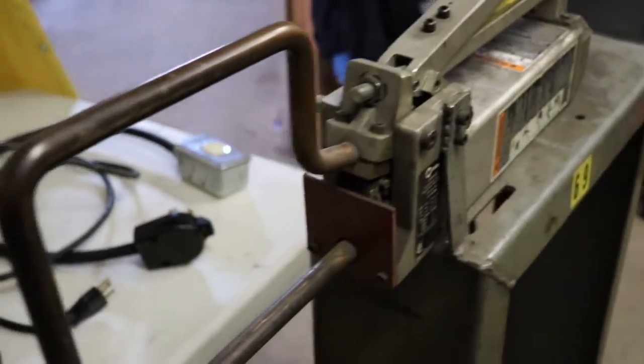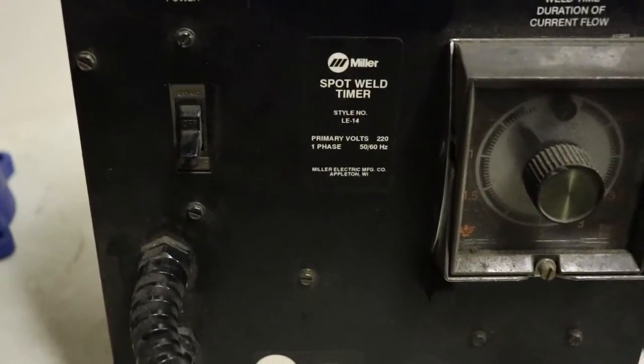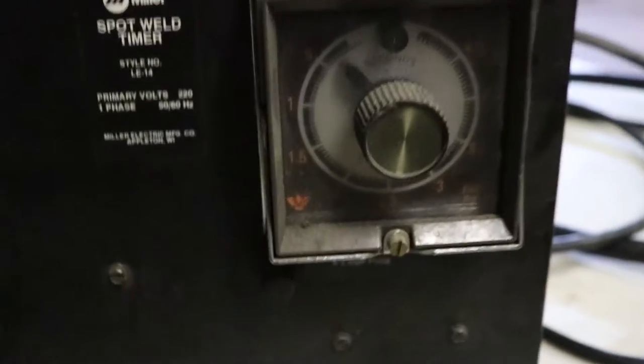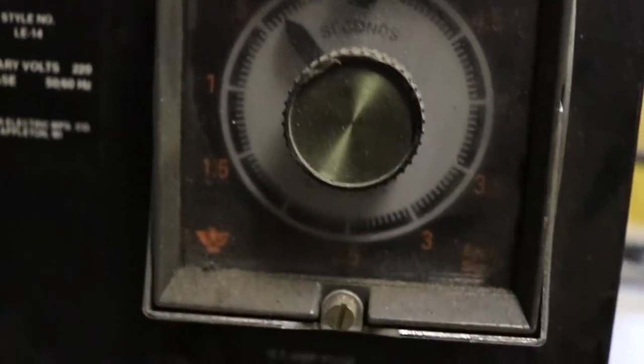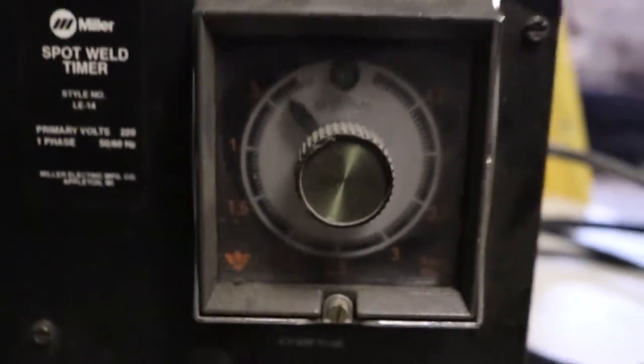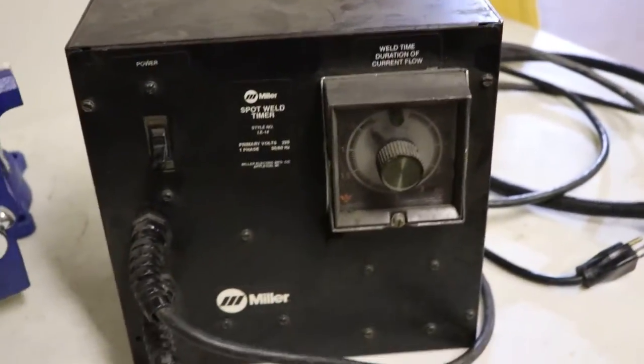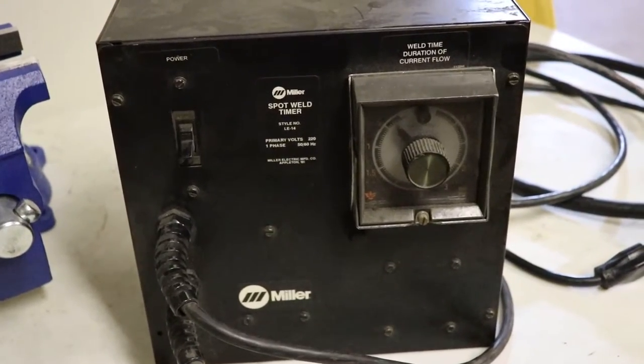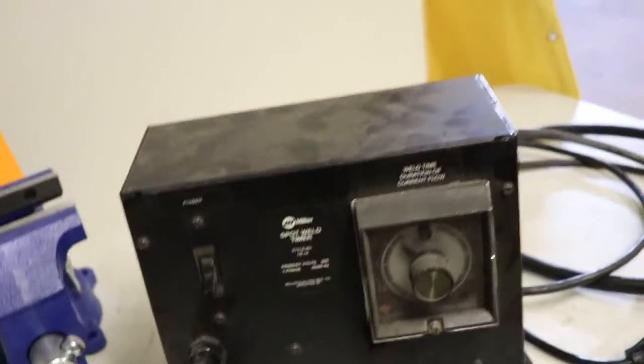That's the basic spot welder with the tongs, and then here's the timer that goes with it. So it has an on-off switch, and then you can set the time in here I think between 0 and 5 seconds depending on what you're trying to do. Once you figure out what time you like for your production, you just set it and forget it. Just keep hammering away at it.